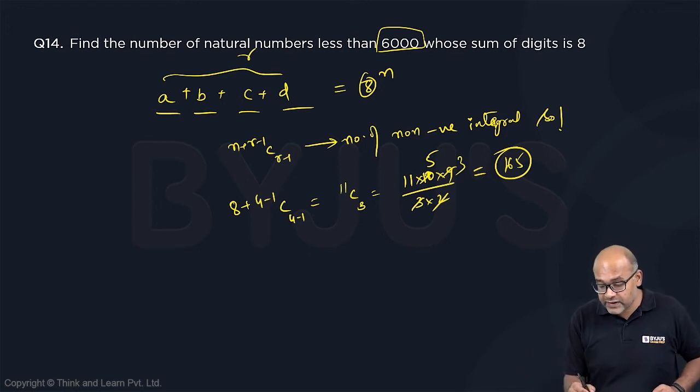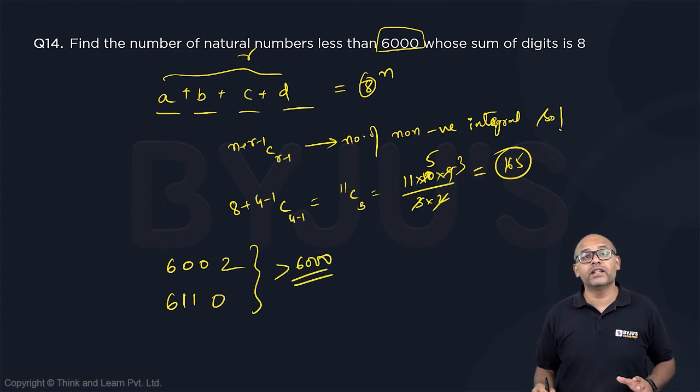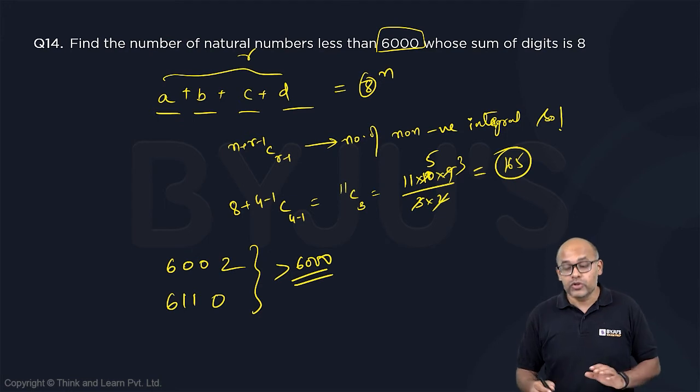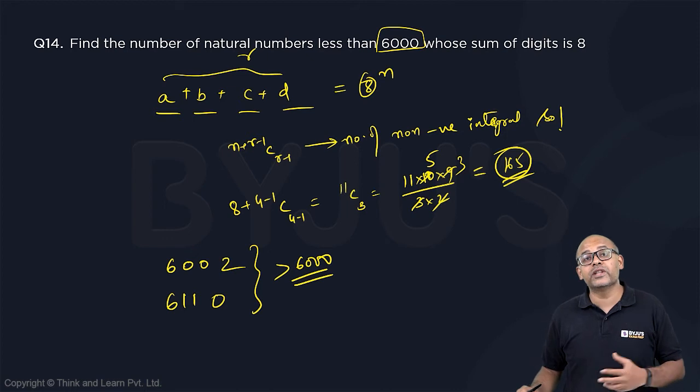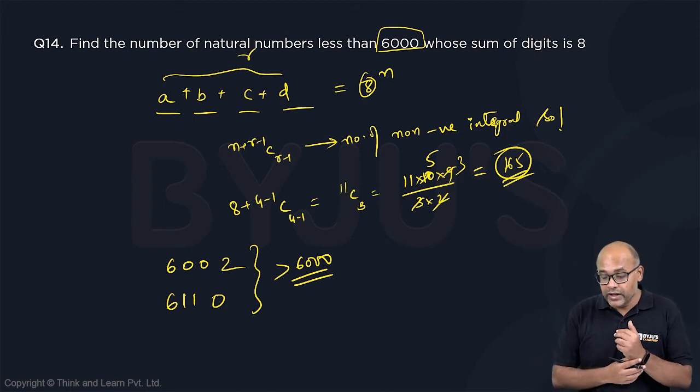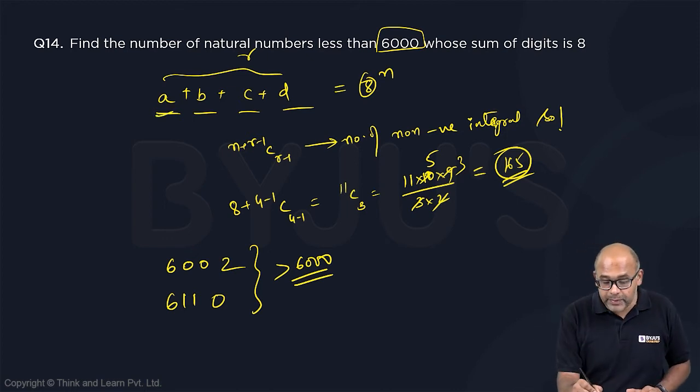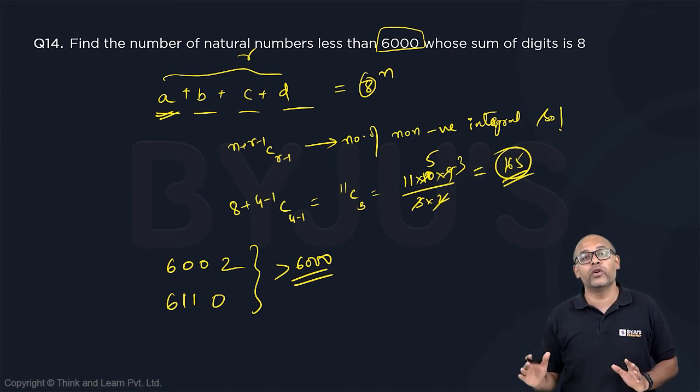What are the possibilities here in 165? I have a possibility of 6002. I have a possibility of 6110. All these are greater than 6000. All these are greater than 6000, I should not count them. So all these are included in this 165. So I will subtract the ones which I don't need. So what are the things which I don't need? Anything with the first digit being 6 and anything else following it.